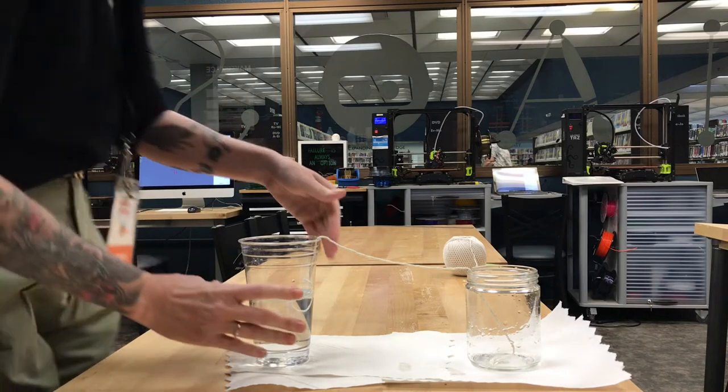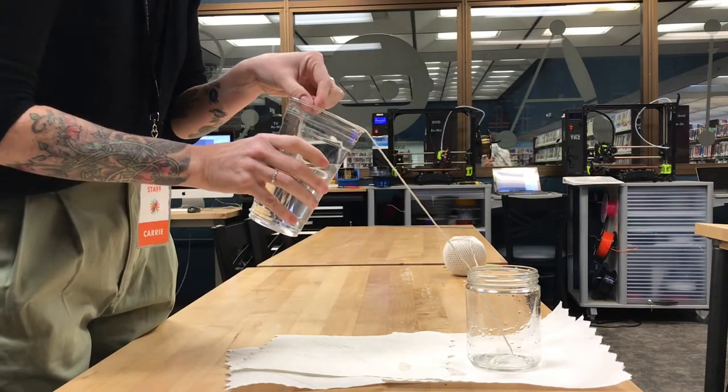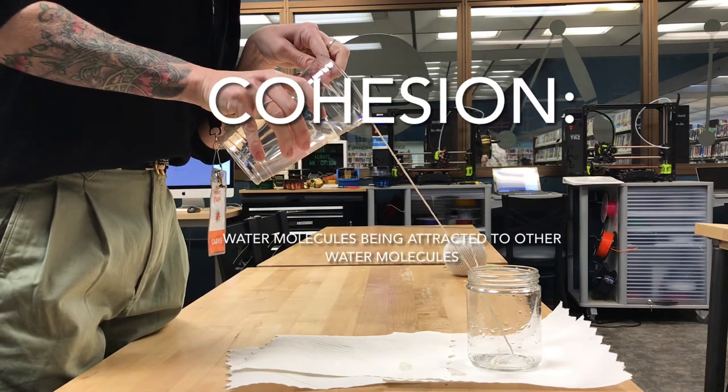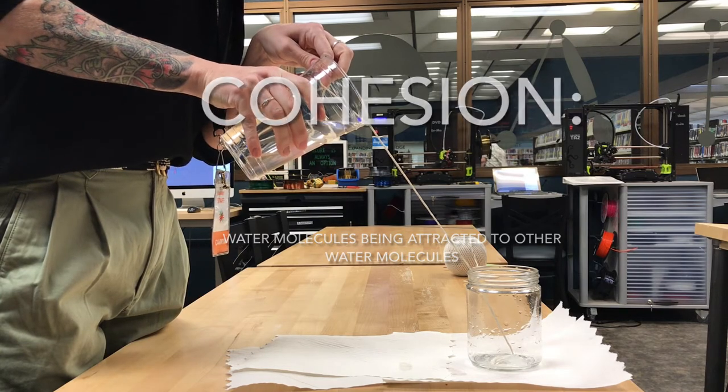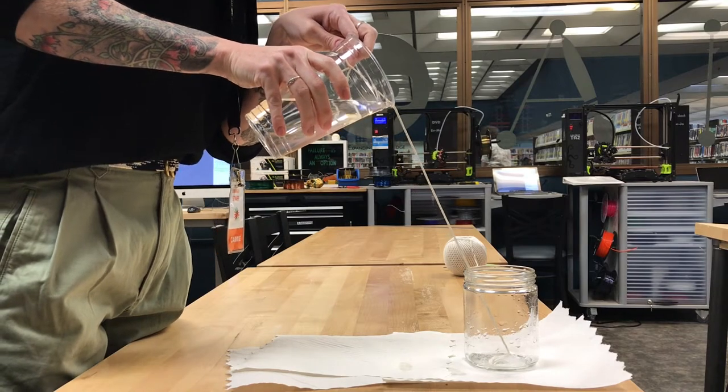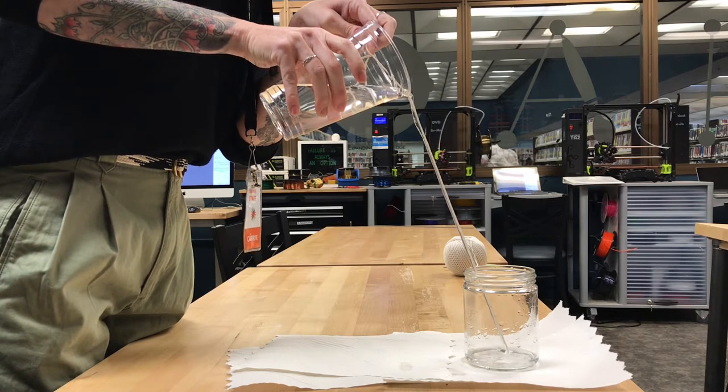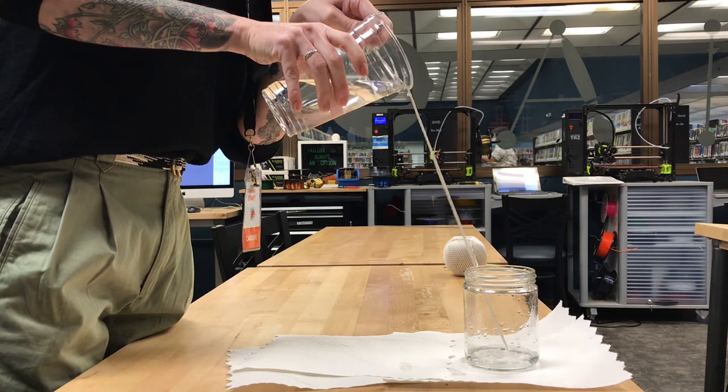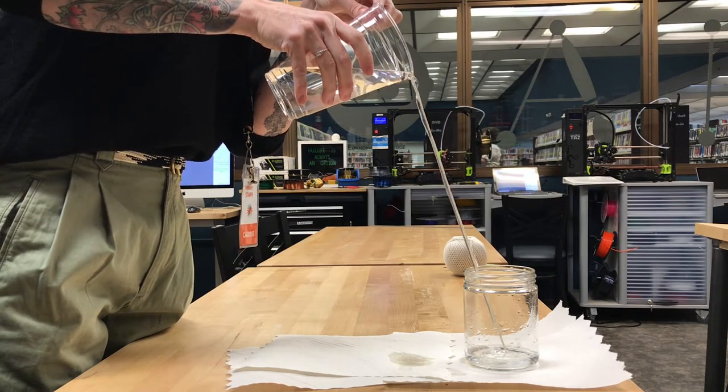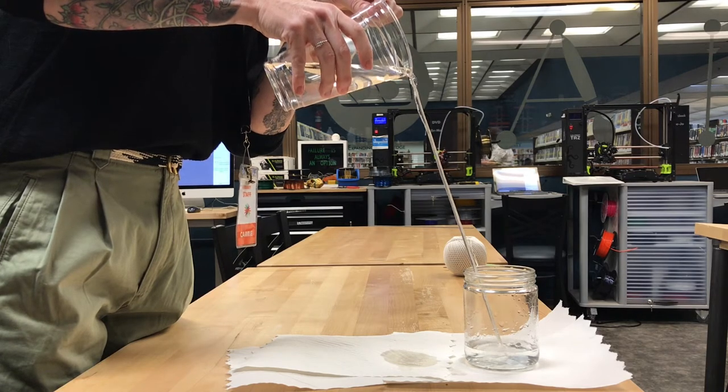But if I take the string, a wet string, and try the same trick again, except this time I've got cohesion and adhesion working together, let's see if we can make it work. And this time, as you can see, the water, there we go, is gonna follow the string right down. So the stickiness of water molecules together, and the fact that water molecules like sticking to other things, will make the water travel along this string at an angle, which is kind of cool, right?